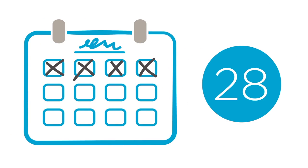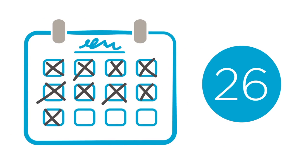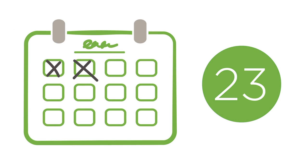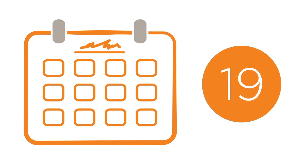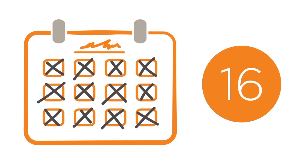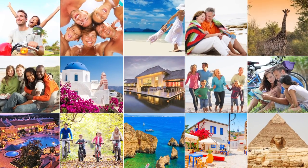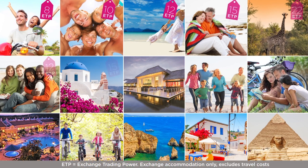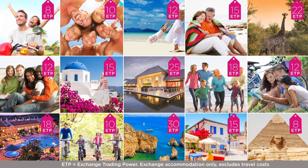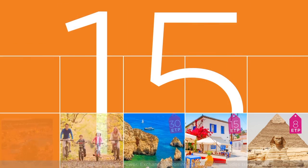You can influence the value that is assigned by depositing as early as possible. The earlier you deposit, the higher your deposit trading power, which means you have a better chance of getting the vacation you want. Your deposit trading power determines what exchange vacations you can choose from. All exchange vacation options have values assigned to them, known as exchange trading power.